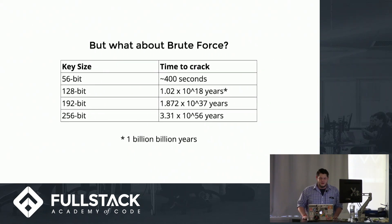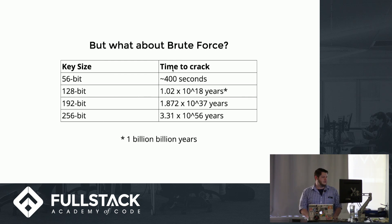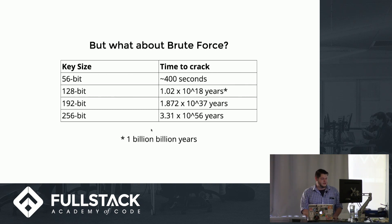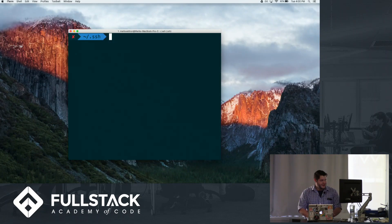With brute force, DES encryption would take about 400 seconds to decrypt with a supercomputer — or maybe a couple of minutes to a couple of days on a normal computer depending on complexity. But once you get into AES encryption key lengths, it would take a billion billion years with the fastest supercomputer in the world. So you probably don't have to worry about that.